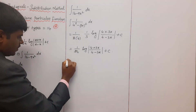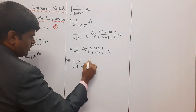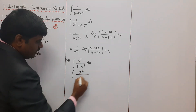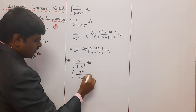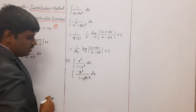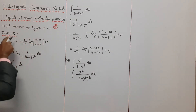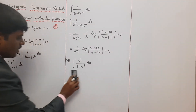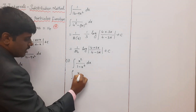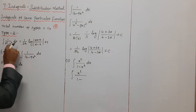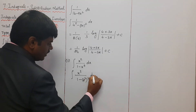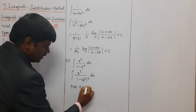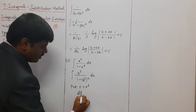Second example: integration of x²/(1 - x⁶) dx. Rewrite the denominator: 1 - x⁶ = 1² - (x³)², so this becomes integration of x²/(1 - (x³)²) dx. Using substitution, put t = x³, so dt/dx = 3x², meaning dx = dt/(3x²).